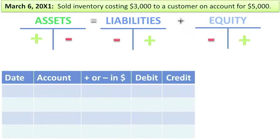Now we are on to one of the hardest journal entries for students to learn because there are actually two pieces of this transaction going on. There's what you gave and what you received. Whenever you have a transaction where you're selling inventory to a customer and receiving payment or getting promised to receive payment, think of it as two different things.